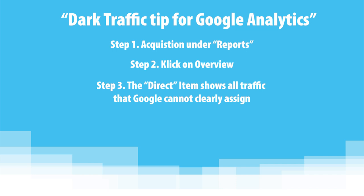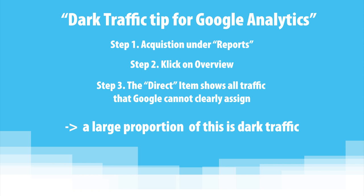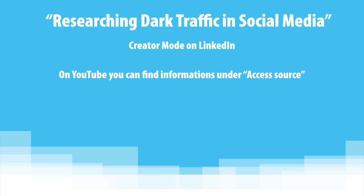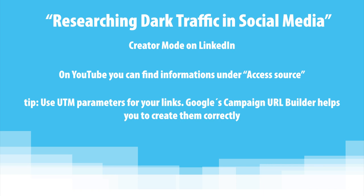You also have a few options for researching dark traffic in the social media sector. On LinkedIn, for example, you can activate creator mode. With the web analysis tools available to you, you should take a look at the number of profile views. Especially when it comes to ads, interested users often visit the corresponding profile. On YouTube you can find this information under access source. Another way to better understand where your traffic is coming from is the use of UTM parameters for your links. With these code snippets at the end of a URL, you can track the number of clicks on a link in your channels and who has followed it. Google's campaign URL builder helps you to create them correctly.